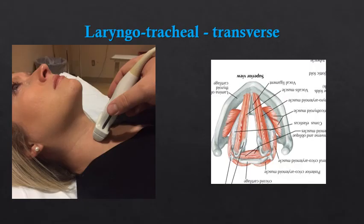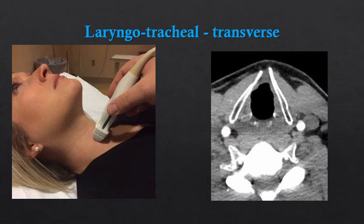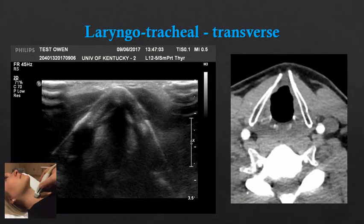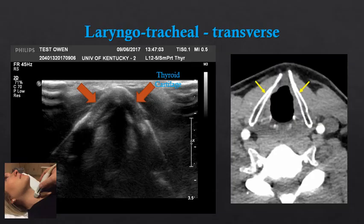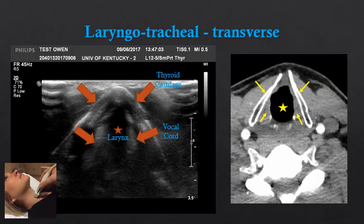Now let's look at the laryngotracheal structures in a transverse orientation. Here we have a CT of the thyroid cartilage in the larynx. When we compare that to ultrasound, we see many of the same structures. We have the thyroid cartilage exteriorly. In this case, the thyroid cartilage is echogenic, similar to what we see with bone, but because it is not calcified bone, the ultrasound can penetrate it and we can see structures deep to the cartilage. Deep to the cartilage we see the vocal cords or the true vocal folds. In the center of the image we have the larynx, which is filled with gas and is therefore represented by an area of shadowing.